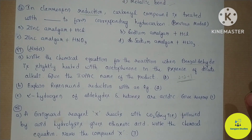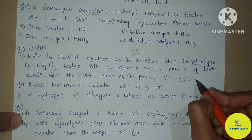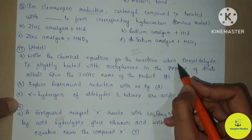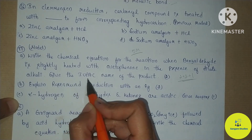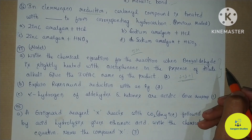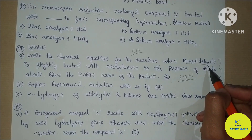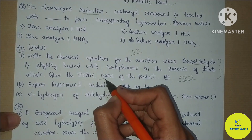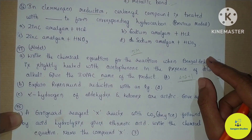From the model question paper, here is a 5-mark splitting-type question in 2+2+1 format. Write the chemical equation for the reaction when benzaldehyde is gently heated with acetophenone in the presence of dilute alkali. Give the IUPAC name of the product. This reaction is called Cross Aldol Condensation. If you study Cross Aldol Condensation — the reactants, the product, the chemical equation, and the IUPAC name — you can answer this question perfectly by studying named reactions.